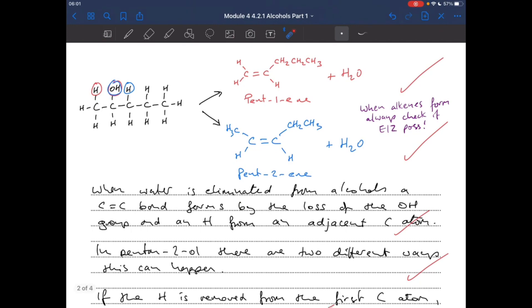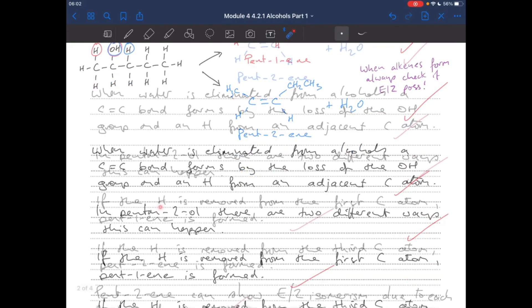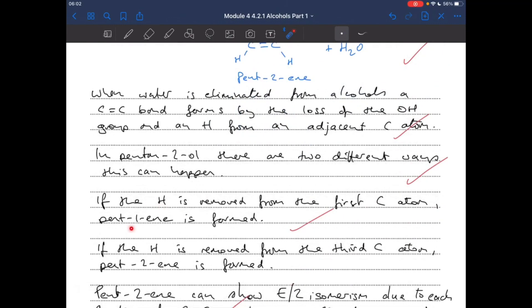So, starting with my answer, when water is eliminated from alcohols, a C-C double bond forms by the loss of the OH group and an H from an adjacent carbon atom. There's two ways to do this in pentan-2-ol. Removing the H from the first carbon atom gives pent-1-ene. Removing it from the third carbon atom gives you pent-2-ene.